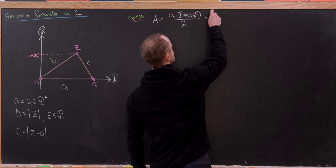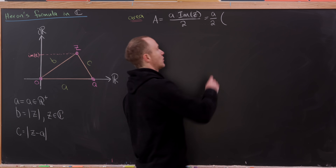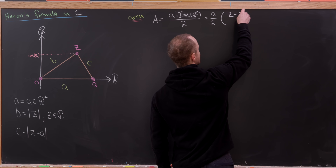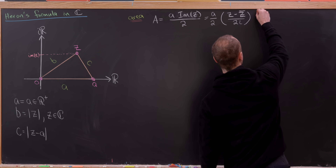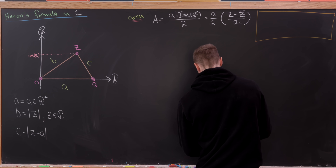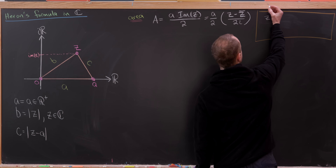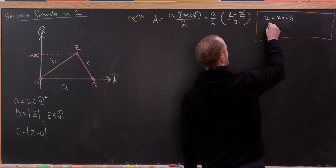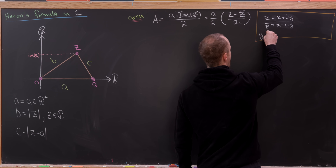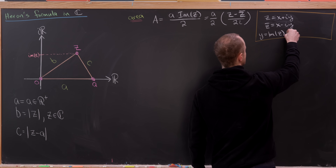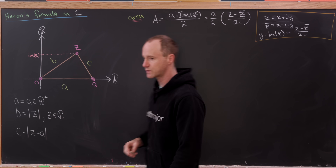Let's write this as A over 2 and use the formula for the imaginary part: Im(Z) equals (Z minus Z̄) over 2i. If Z equals x plus iy, then Z̄ equals x minus iy, and so Y — the imaginary part of Z — equals (Z minus Z̄) over 2i. That's where that formula comes from.